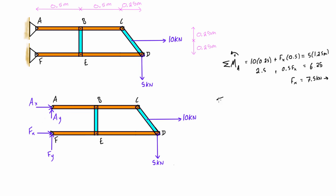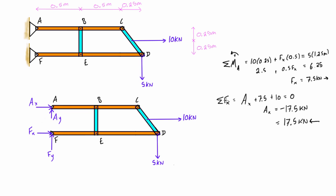Now doing the sum of forces in the X direction for the whole structure gives us AX equal to negative 17.5 kilonewtons, or 17.5 kilonewtons in the direction opposite to what we assumed. If we try to take the sum of forces in the Y direction we'd have two unknowns, so that's as far as we can go using the entire structure as a whole.